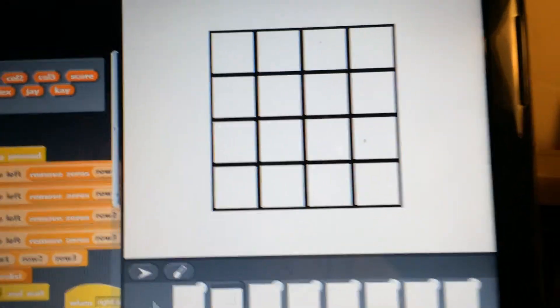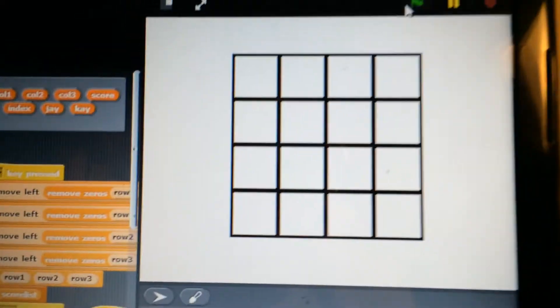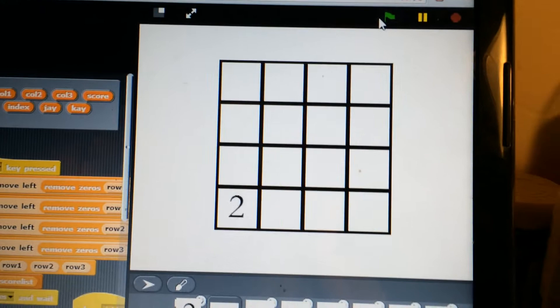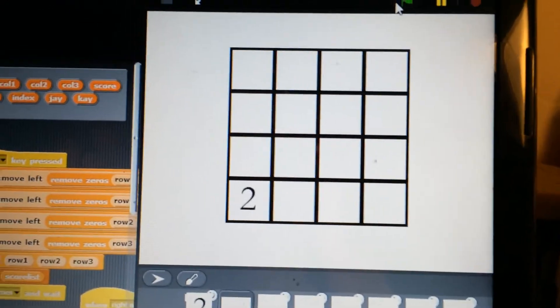Let's begin playing our game. To begin, you hit the green flag. This is the beginning of the game. In the beginning of the game, we have two randomly generated twos.